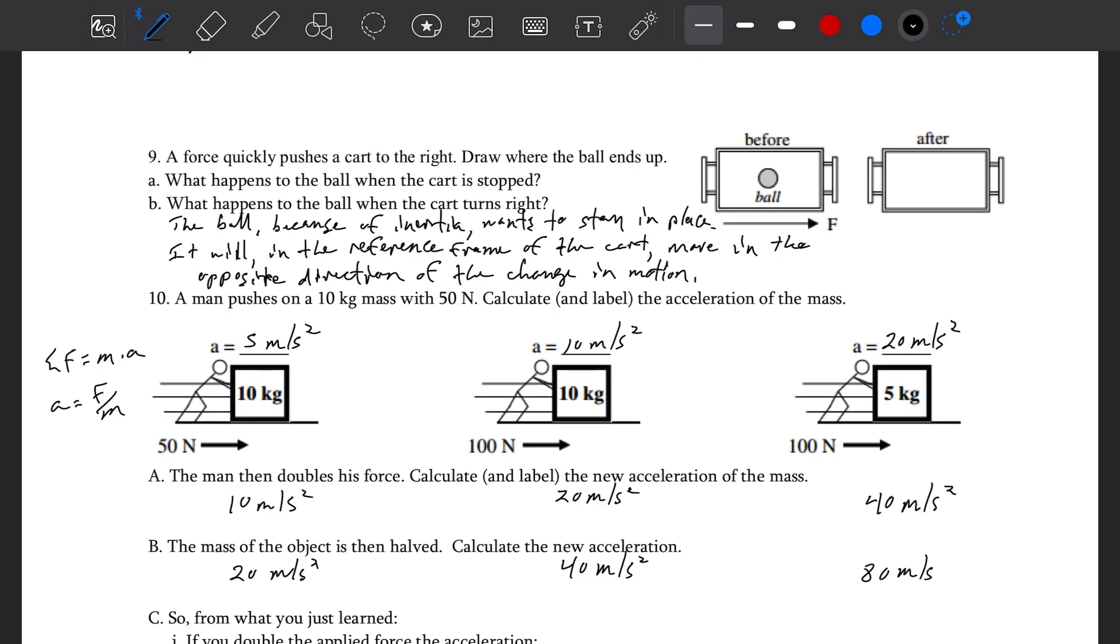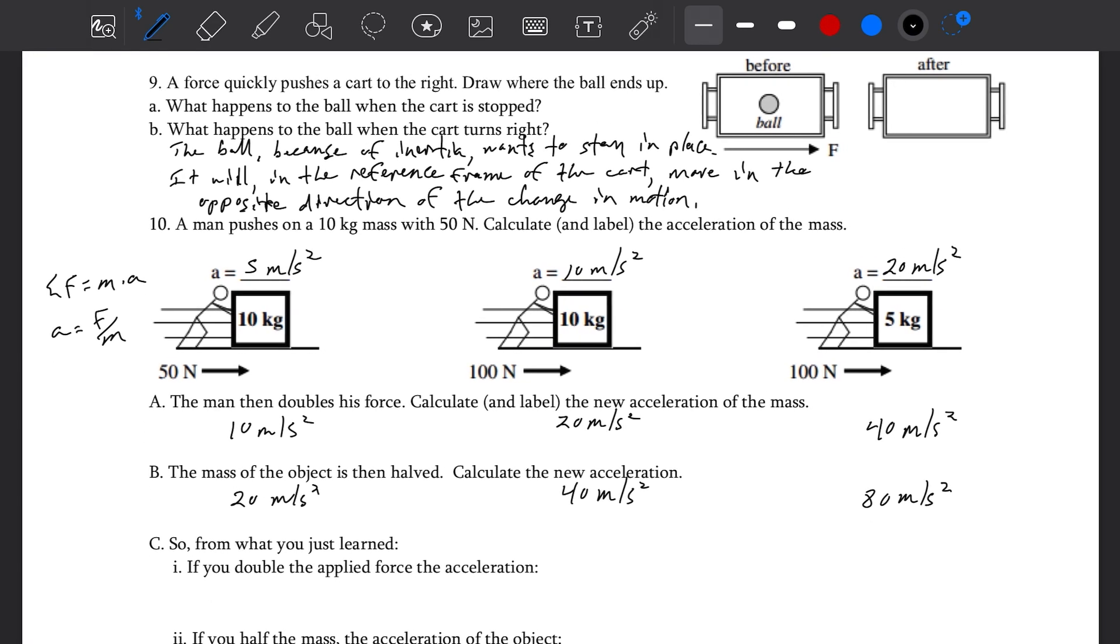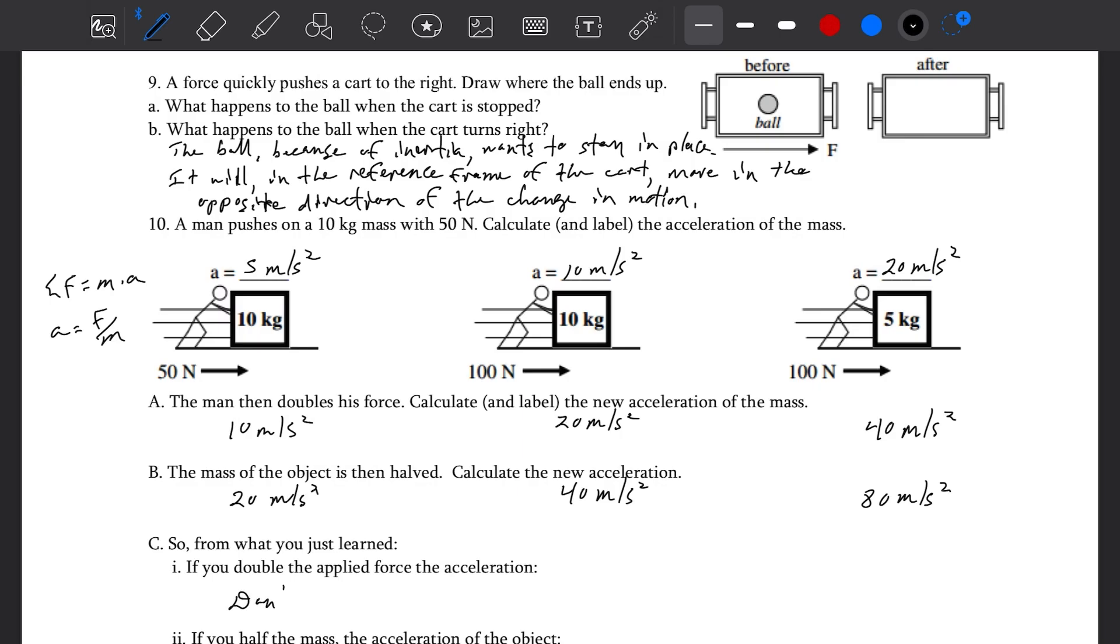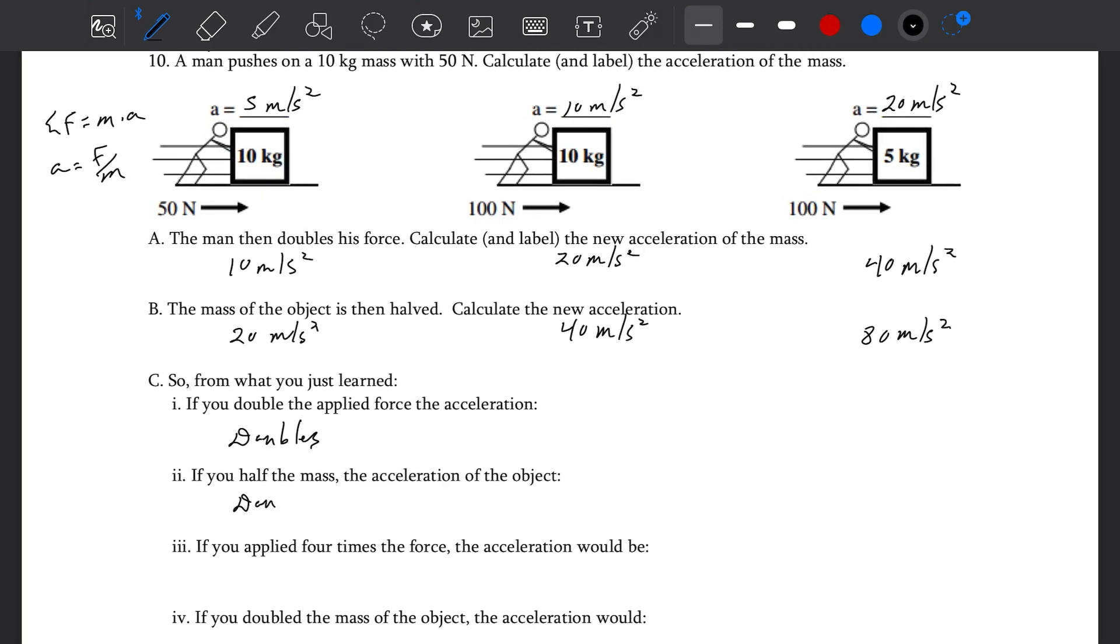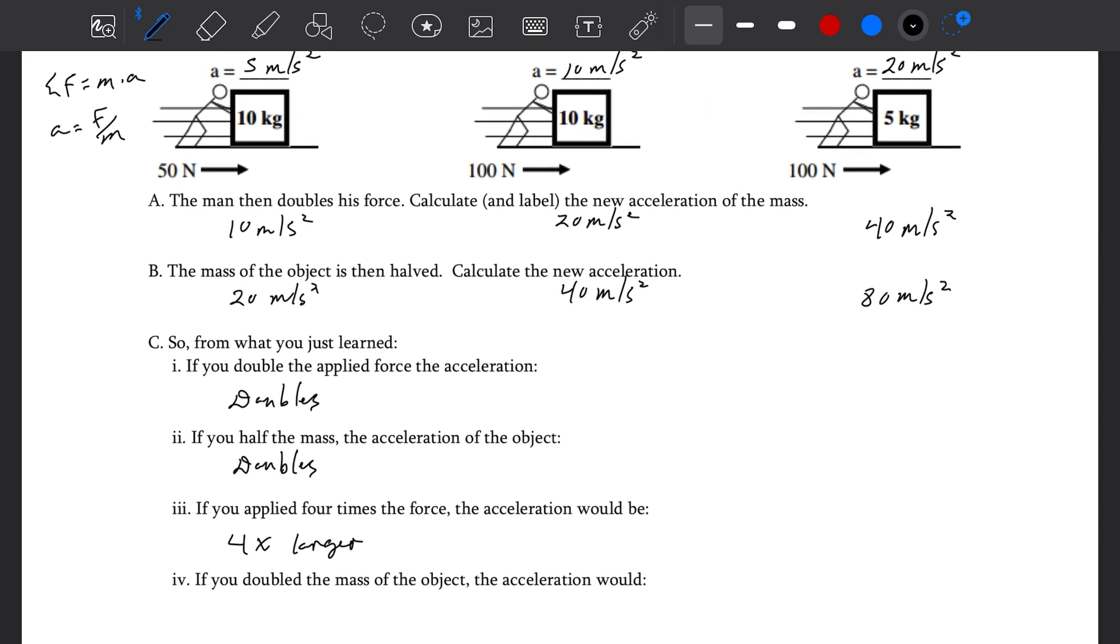Looking at each of these setups, 1 through 3. So from what you just learned, if you double the applied force, the acceleration does what? If you double the force, the acceleration doubles. If you half the mass, the acceleration doubles. They're inversely proportional. If you applied four times the force, the acceleration would be four times greater. Four times larger. If you double the mass of the object, the acceleration would what? It would half. That is that relationship.